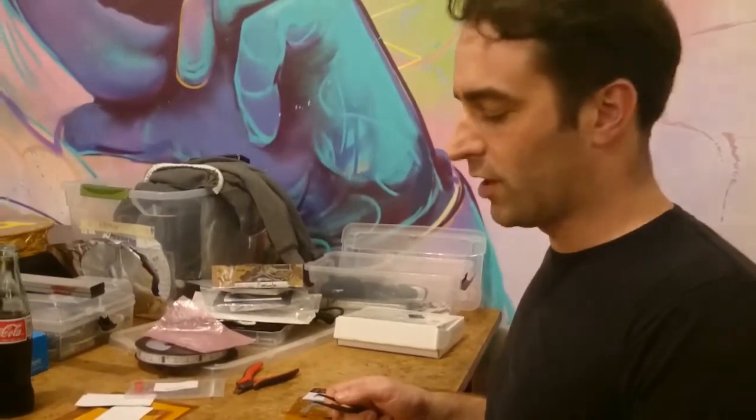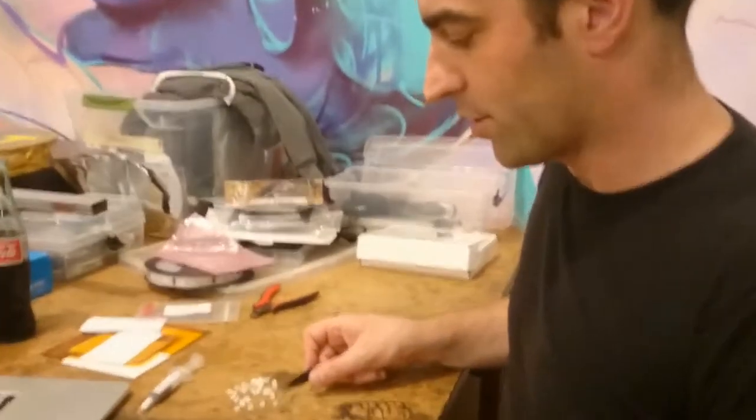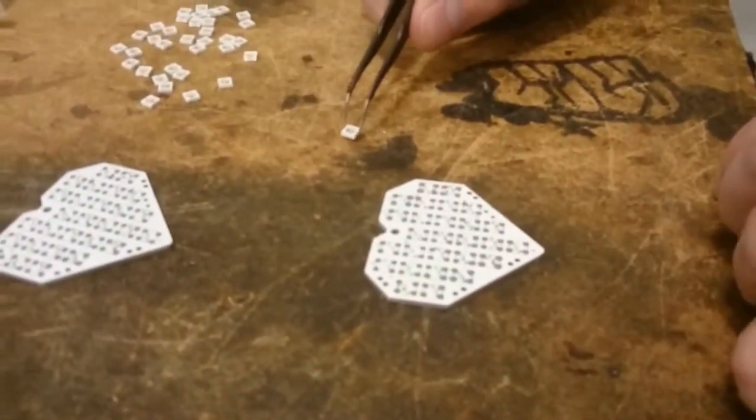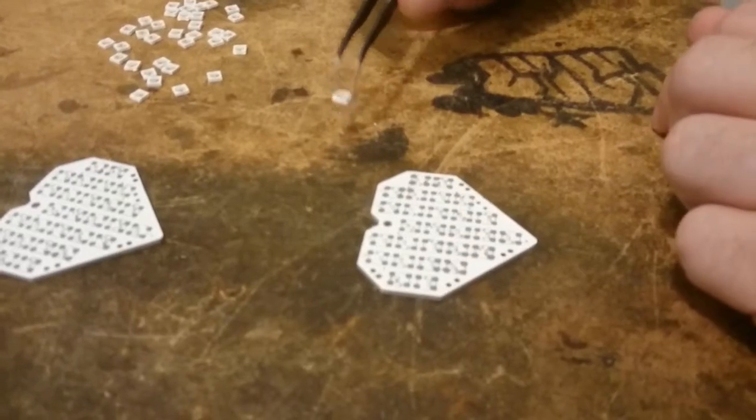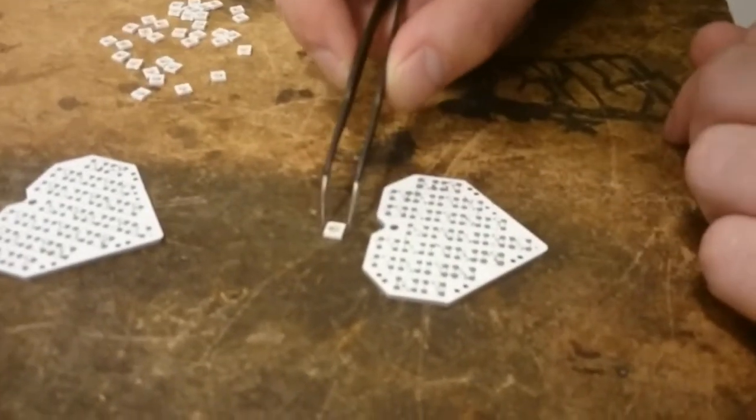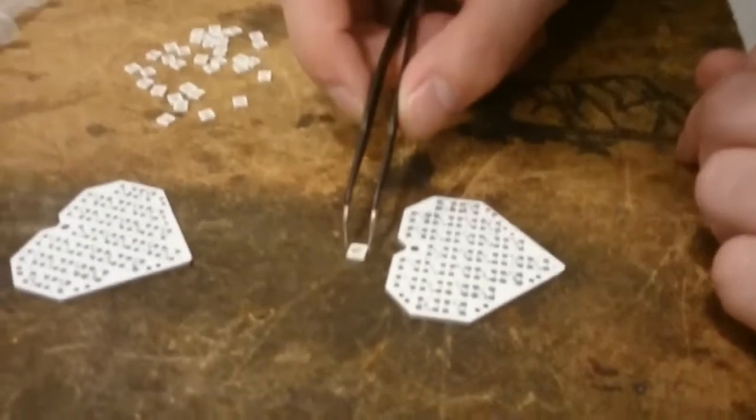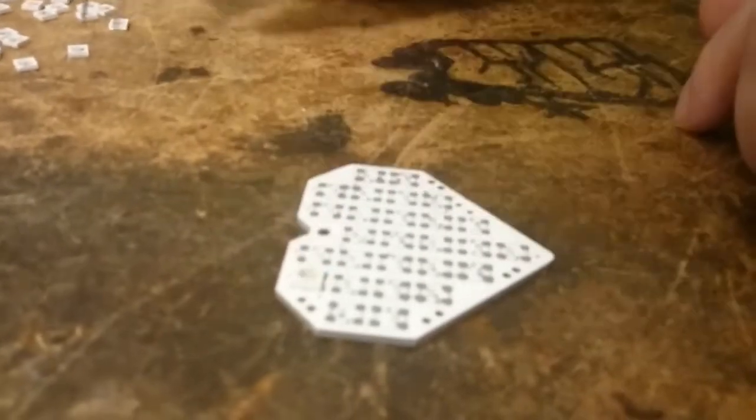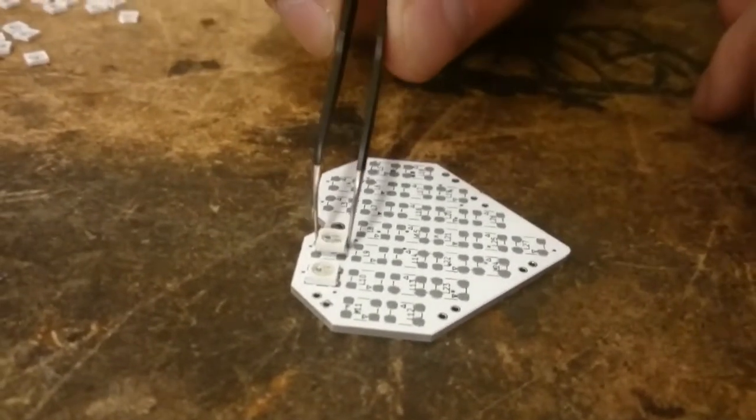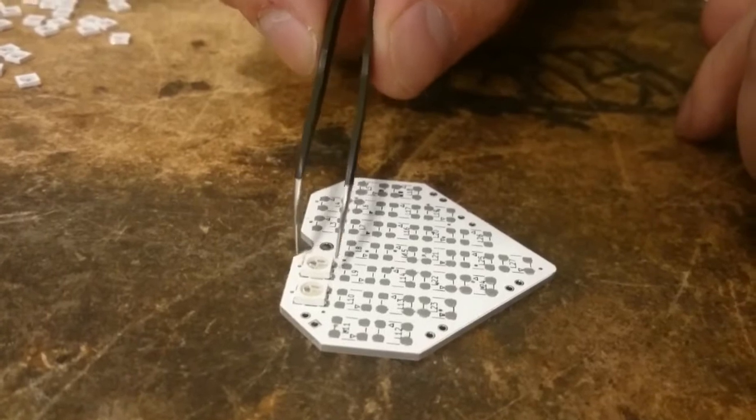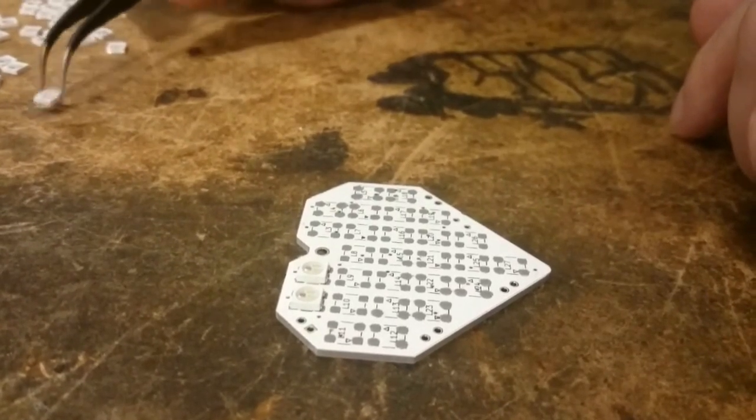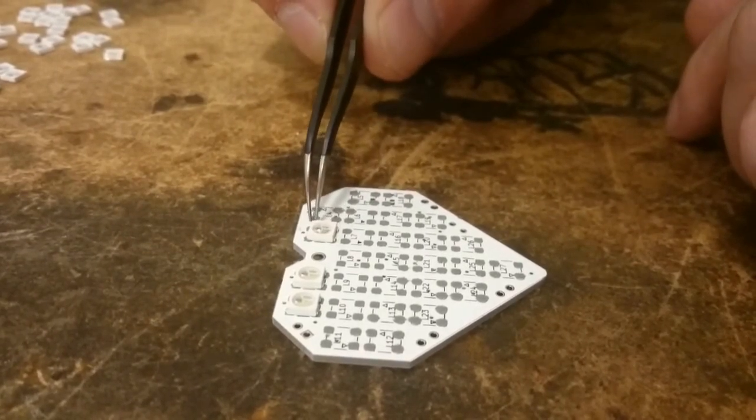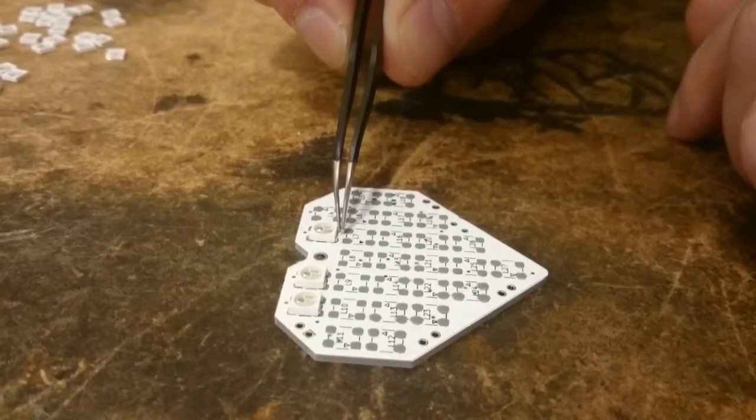Now we have solder paste on our boards. The next step is to get all the components on. Conveniently, the solder paste is a little bit sticky, so when we drop components on, they'll kind of stay where they are. It's not like putting the components on a bare board. In this case, I've done this a few times before, and so I know which way up they go, but make sure you're putting them the right way around, and you just get your tweezers, and place your components one by one. Try and get them as centered as possible, although surface tension will pull them closer to where they're meant to be during the soldering process. I've found with these, it's not perfect.